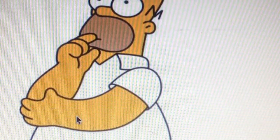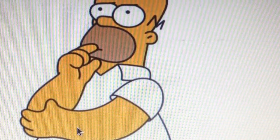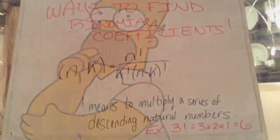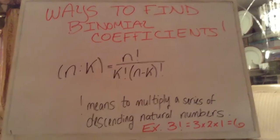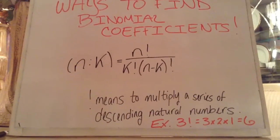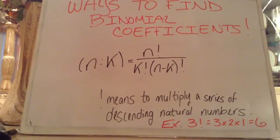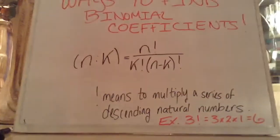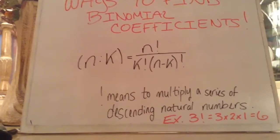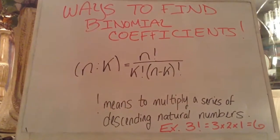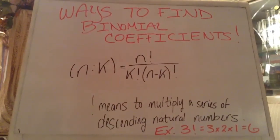So the question is, how can we find these binomial coefficients? These are the ways and patterns that define binomial coefficients. One basic way is this equation on the screen, which is n choose k equals n factorial over k factorial times the quantity n minus k factorial. What the factorial means is to multiply a series of descending natural numbers. For example, 3 factorial would equal 3 times 2 times 1, which equals 6.